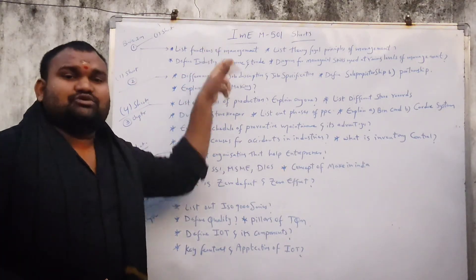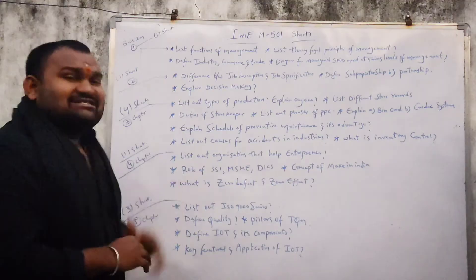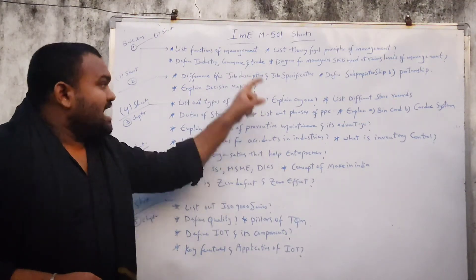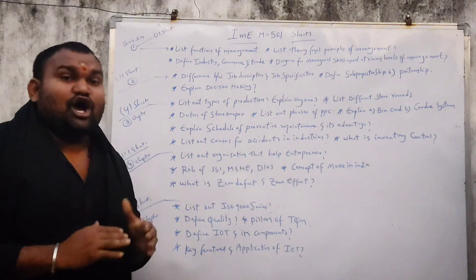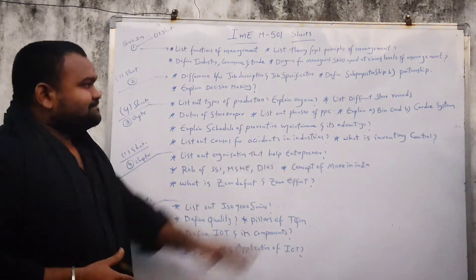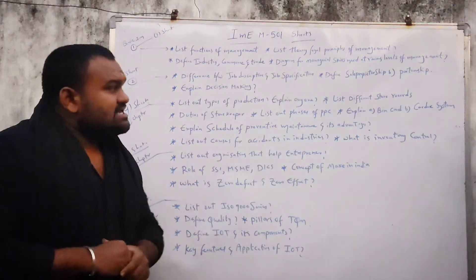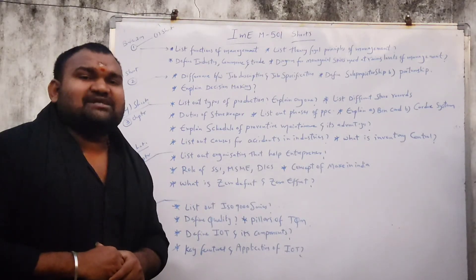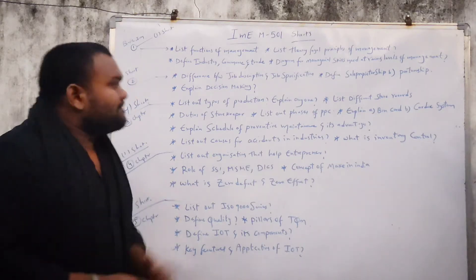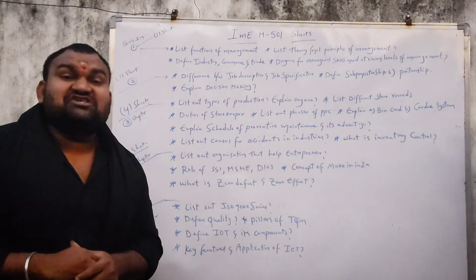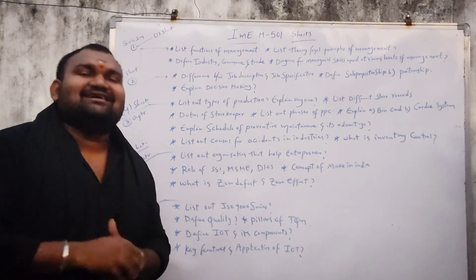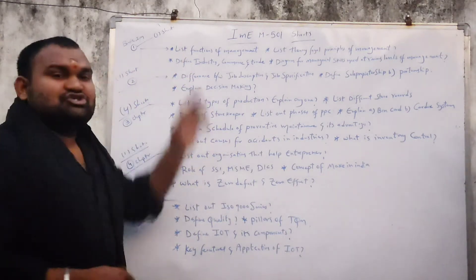These three questions are a bit short. Next, the 2nd chapter short answer: differences between job description and job specification. Next, define sole proprietorship and partnership — the difference between them. Next, explain decision making — decision making and its importance in industry. Those are the last three questions for this chapter.